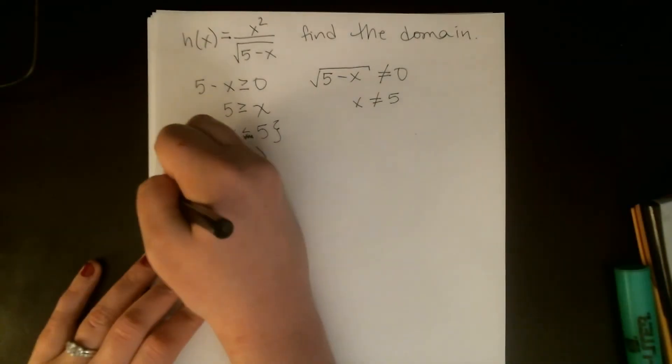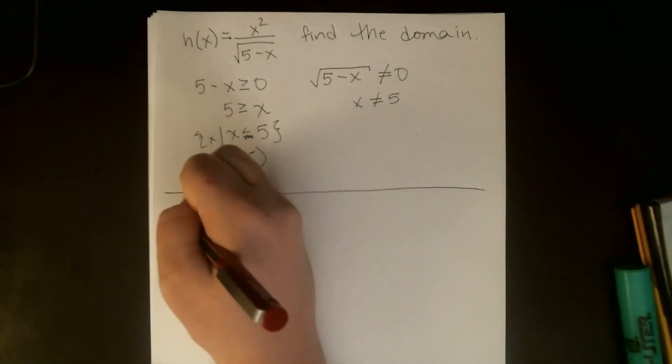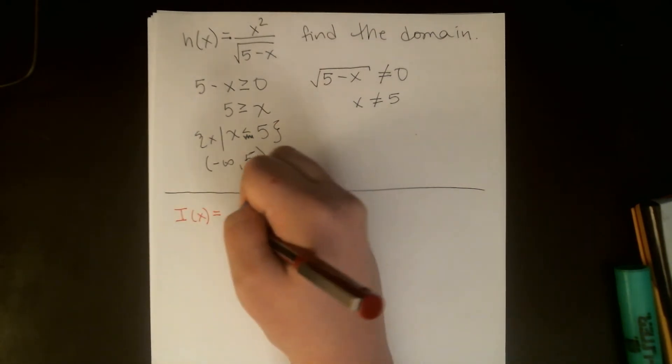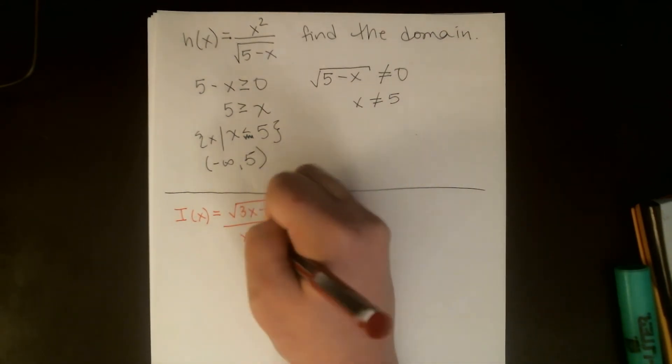Okay, so there's one. And I want to do one more that has both fractions and roots in it, just to make sure that we're not mixed up. I have x is equal to the square root of 3x minus 5 over x plus 4.